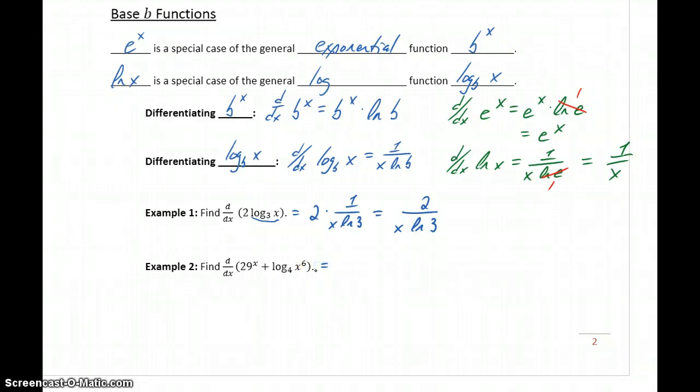In our last example here, we have the derivative of 29 to the x power. Again, that function remains completely unchanged, but then we multiply by the natural log of the base.